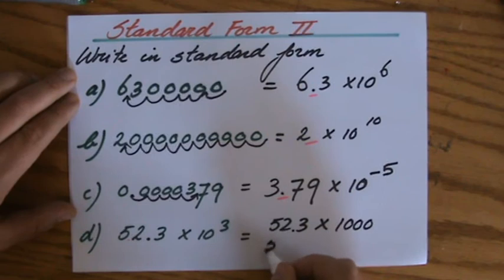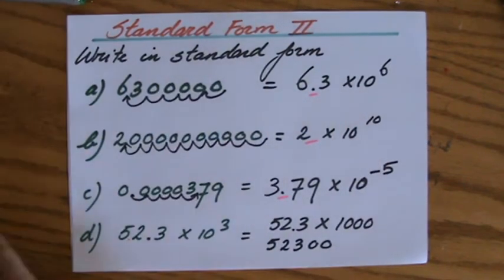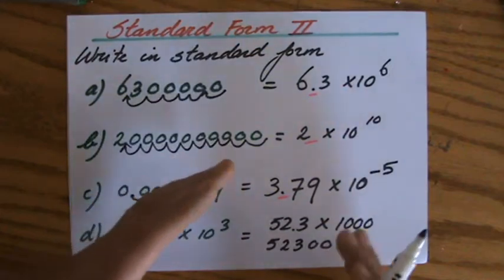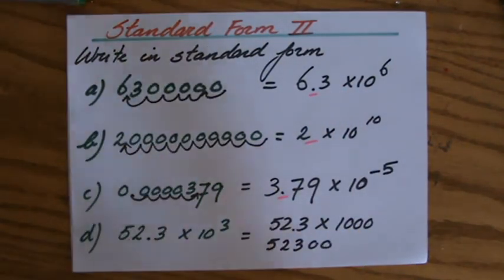And that is equivalent to - I don't have a lot of space, I'm going to write it here - 52,300. Fifty-two thousand three hundred, because basically you're moving the numbers three places.